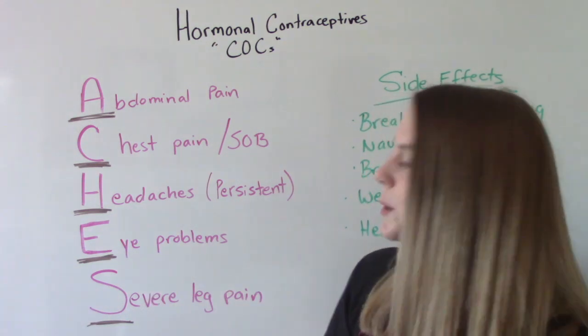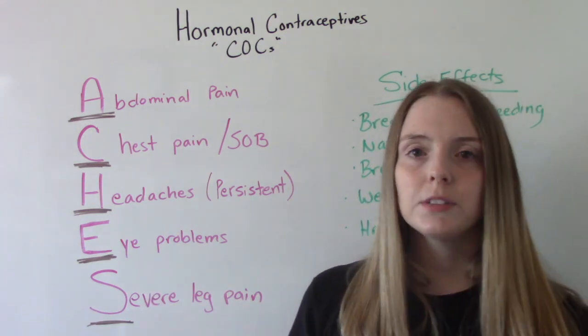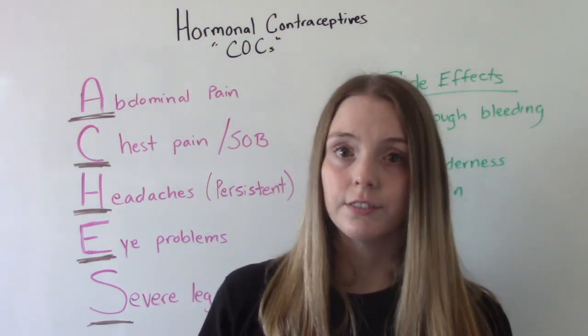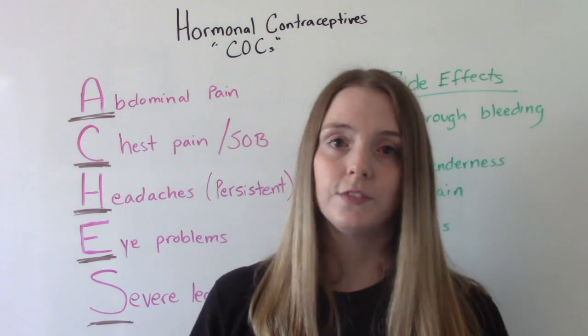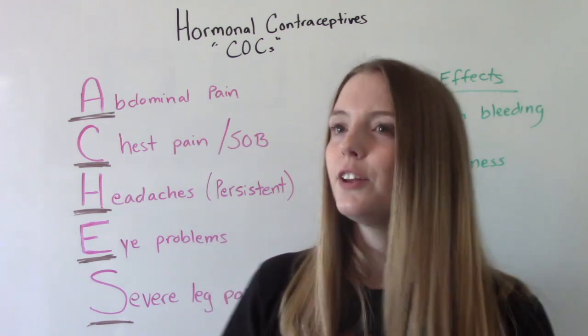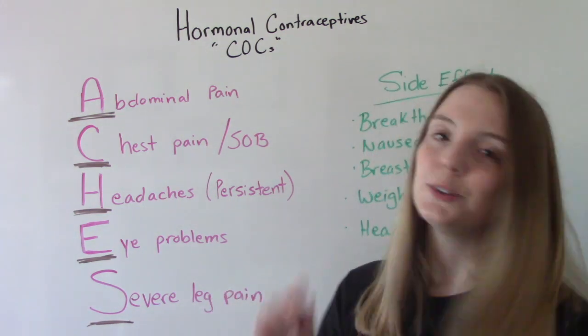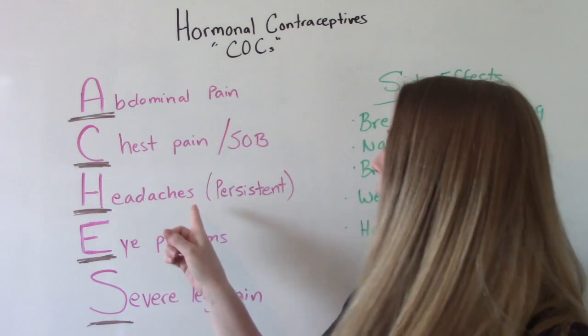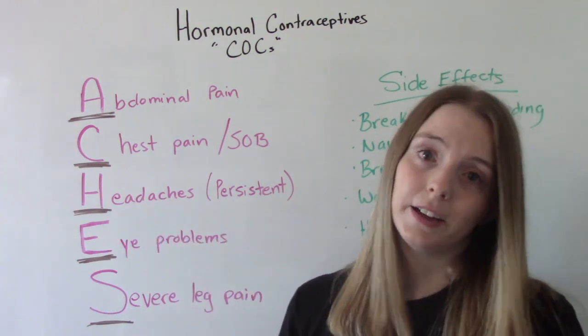E is for eye problems — things like blurry vision or loss of vision. Again, usually related to high blood pressure or maybe even a blood clot.